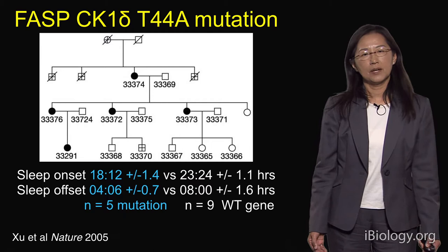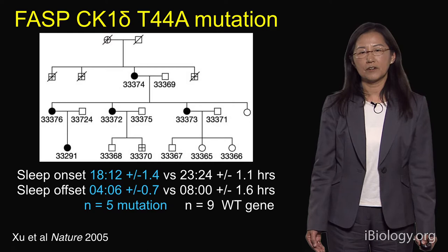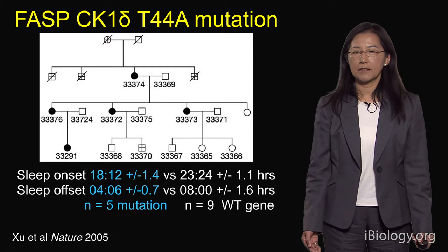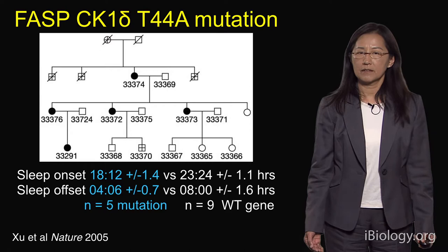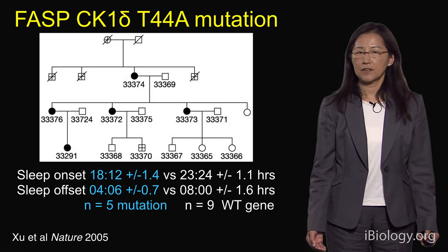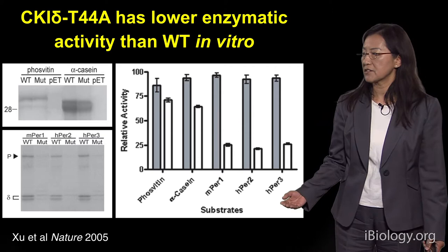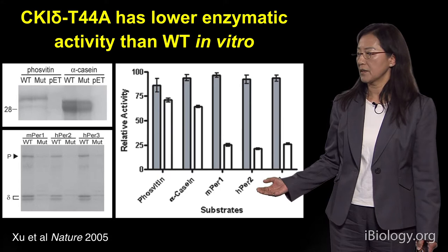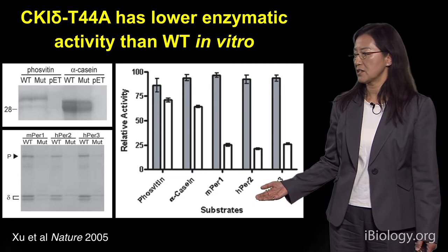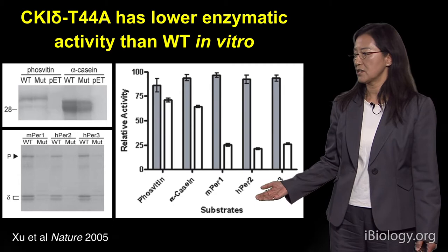The first example is the mutation we found for the family that Louis described. The mutation carriers all showed about 4 hours phase advance. The mutation was found in the gene encoding casein kinase 1 delta, and it changed the amino acid at position 44 from threonine to alanine. This mutation reduces casein kinase 1 enzyme activity. With five different substrates, the mutant enzymes showed reduced activity compared to normal enzymes.